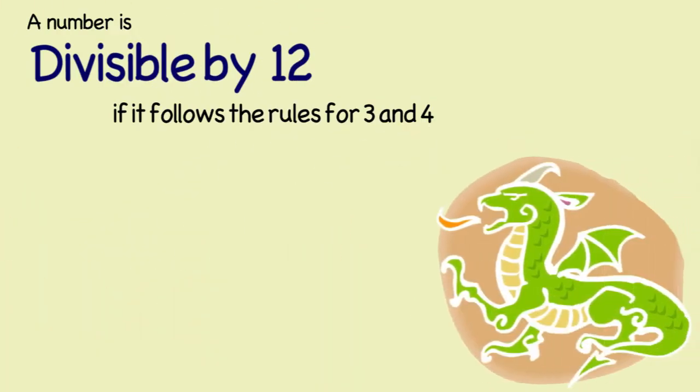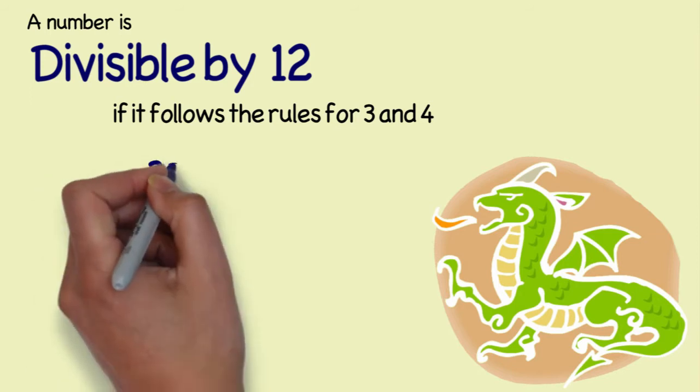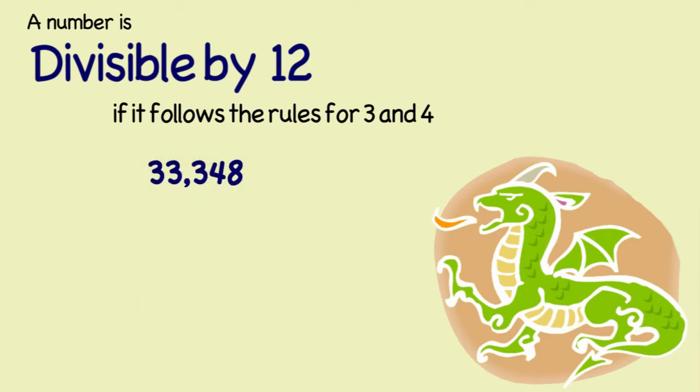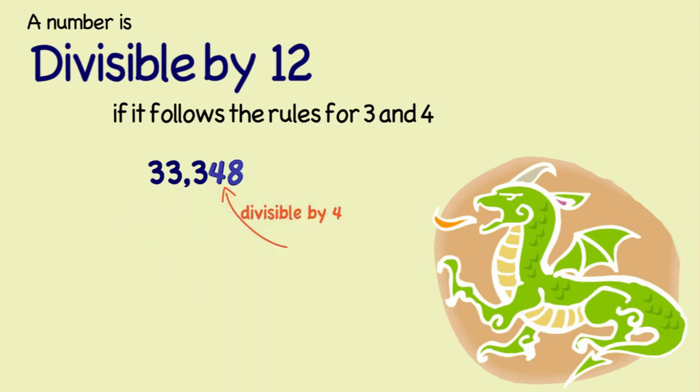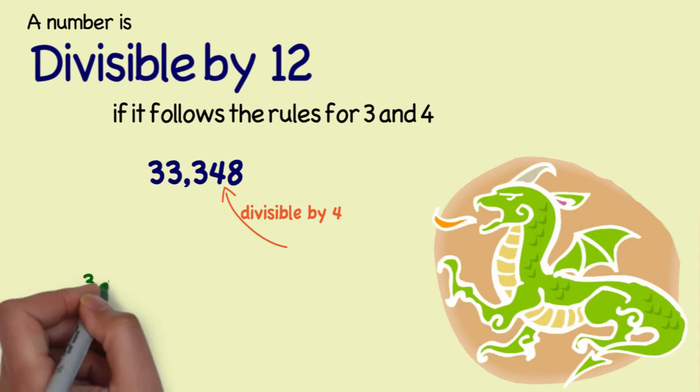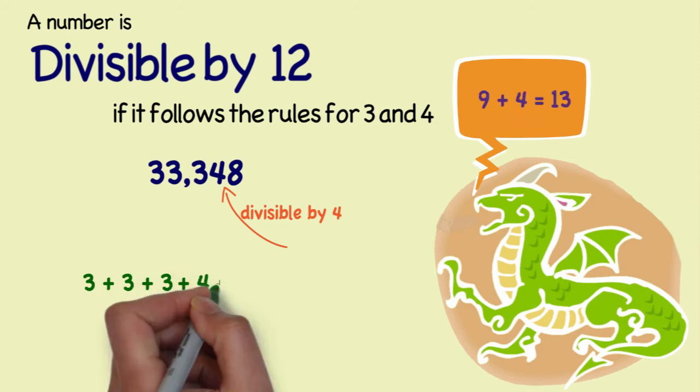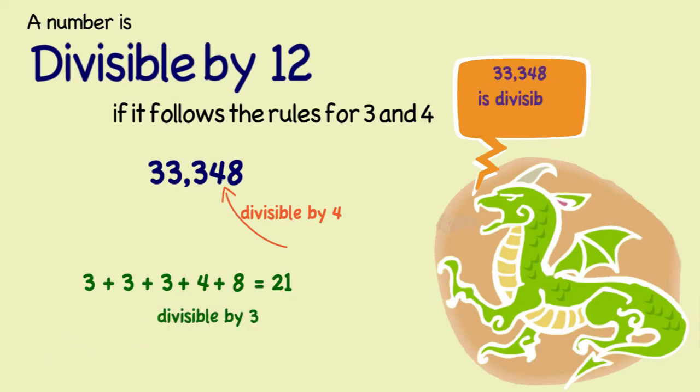Next up, we have 12, which is simple, because if the number follows the rules for 3 and 4, it is divisible by 12. Our example number is 33,348. So, the last two digits, 48, is divisible by 4. And then, if you add up all the digits, 3 plus 3 plus 3 is 9, plus 4 is 13, plus 8 is 21. And 21 is divisible by 3, so the number is divisible by 12.